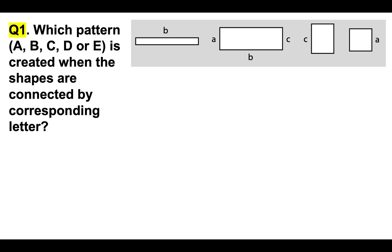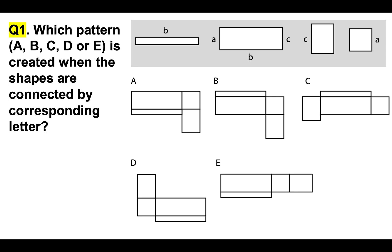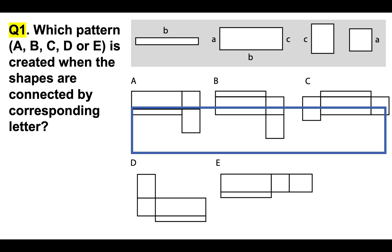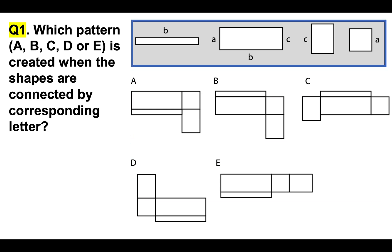Question one: which pattern — A, B, C, D, or E — is created when the shapes are connected by corresponding letter? We need to focus on the different shapes at the top of the screen. You will notice that there are corresponding letters. We need to connect these letters together with the corresponding sides to create a shape, and then choose which one is correct from A, B, C, D, or E.